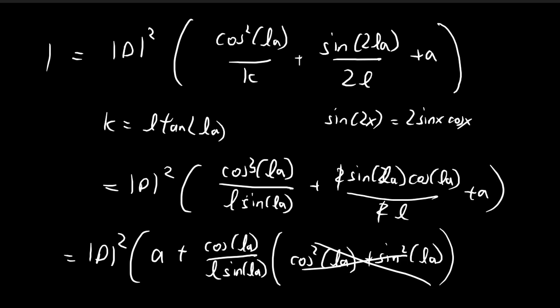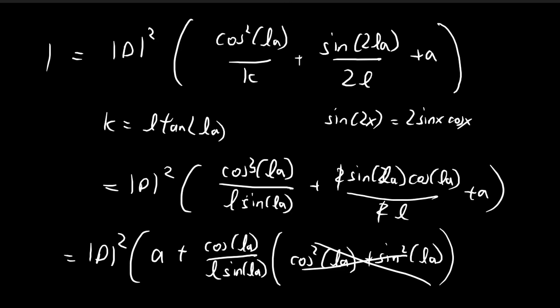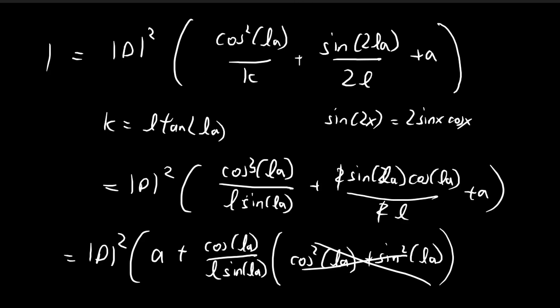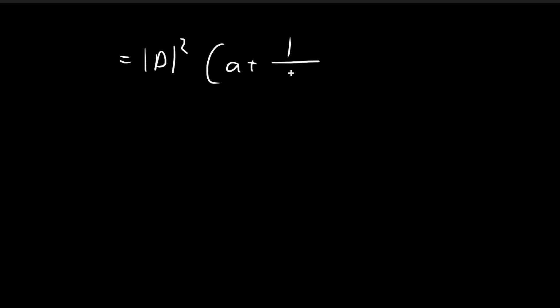So in the end, we get something like this. This whole expression here is equal to the absolute value of d squared a plus, so we have cosine l a divided by sine l a. So I can just express this as l tangent l a.